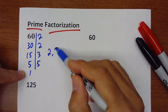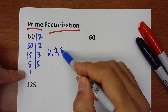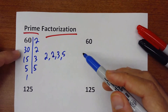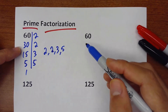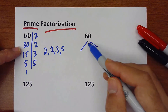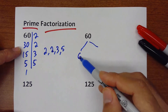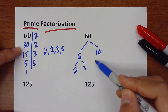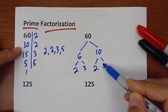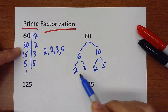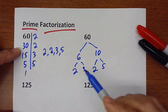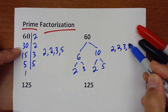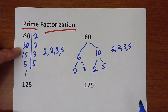So 2, 2, 3, and 5. Now there is another method — like the factor tree method. So 60 is 6 times 10. The 6 is 2 times 3, and the 10 is 2 times 5. At the end, we got the same prime factors: 2, 2, 3, and 5.